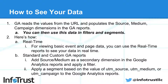The first way is to add source or medium as a secondary dimension in any of the Google Analytics reports, then apply a report filter based on the value that you set in the URL. The other way is by setting up an advanced segment based on the value of source, medium, or campaign, and then applying that segment so you can drill down all of the reports with just your data.